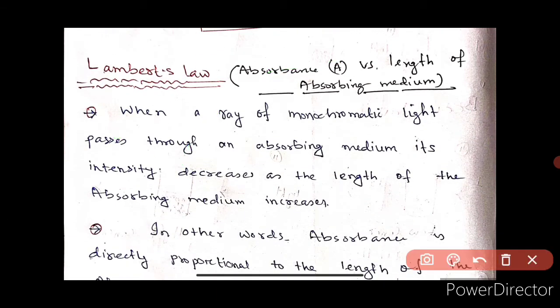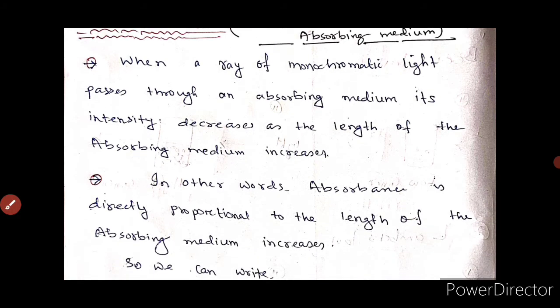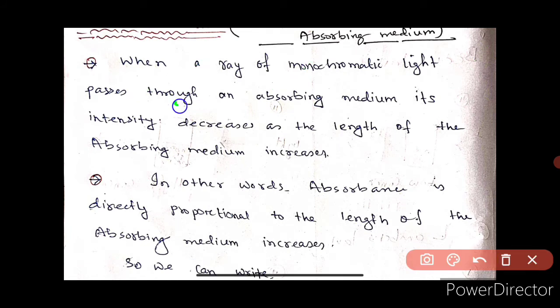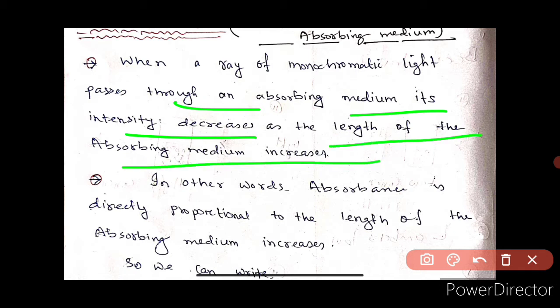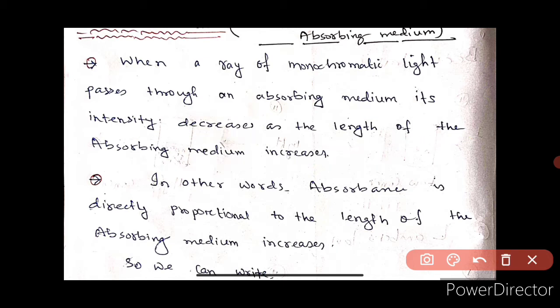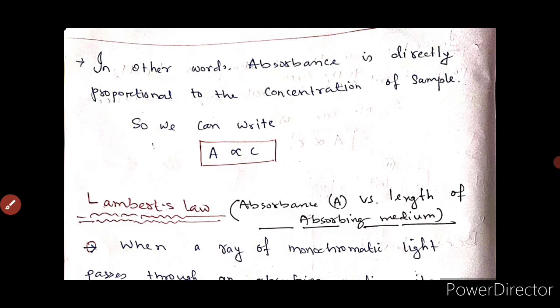Next, Lambert's law. Lambert's law depends on the absorbance and the length of the absorbing medium. If a ray of monochromatic light is passed through an absorbing medium, its intensity decreases as the length of the absorbing medium increases. When the length of the absorbing medium increases, the intensity decreases. So let's see the diagram and we will understand properly.